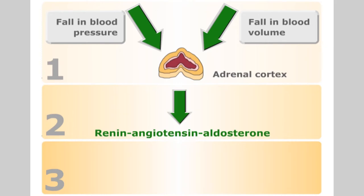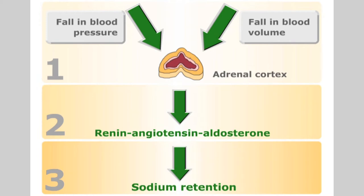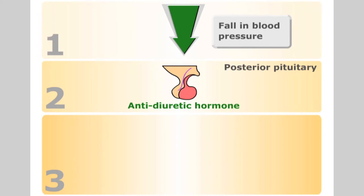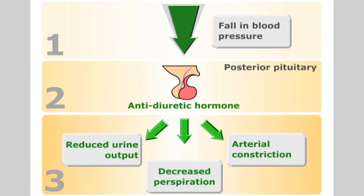A falling blood volume and pressure triggers the renin-angiotensin-aldosterone mechanism to be activated. This leads to sodium retention and thus increases blood volume and blood pressure. A falling blood pressure also causes secretion of antidiuretic hormone from the posterior pituitary. Antidiuretic hormone causes reduced urine output, decreased perspiration and arterial constriction.